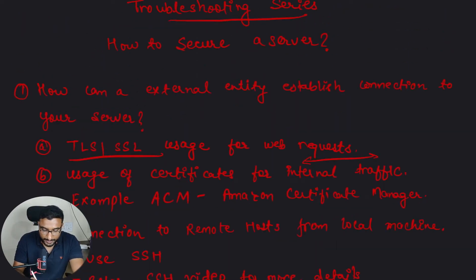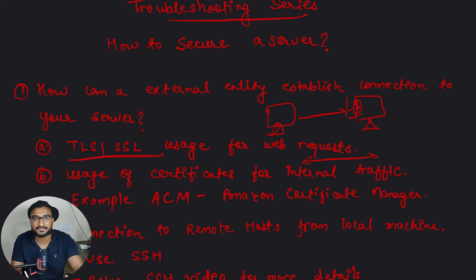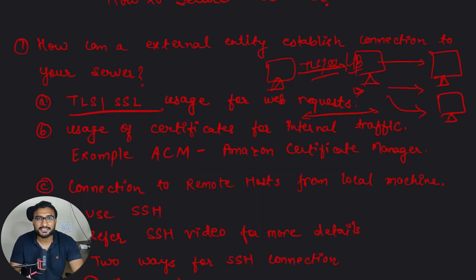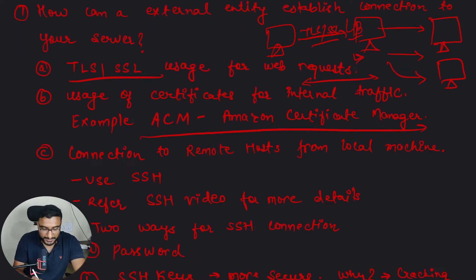Consider your local machine sending requests through a load balancer fronting your backend hosts. Those requests are encrypted by TLS/SSL. However, once the request reaches the load balancer, the TLS connection is terminated, and traffic traveling from the load balancer to actual hosts is sent in plain text. You can use certificates to secure that internal traffic. An example is the Amazon Certificate Manager, a managed service where you can create and use certificates for internal traffic.